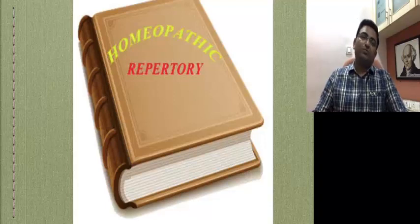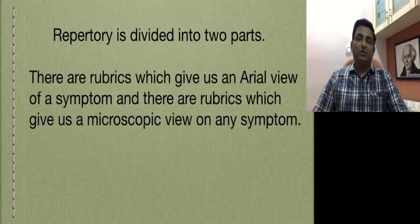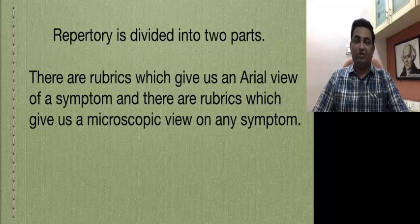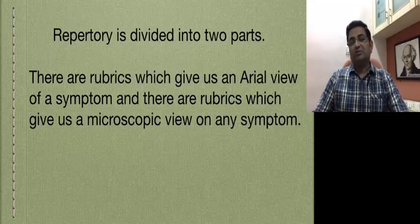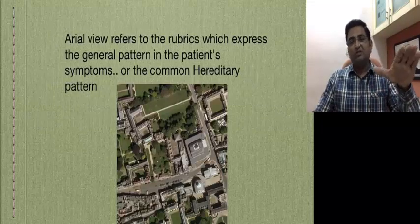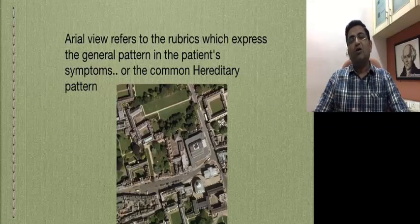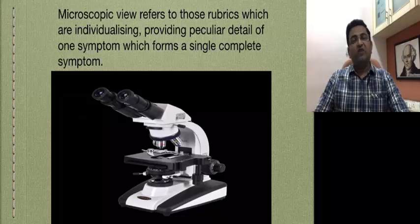From my practical perspective, I divided repertory into two parts. There are rubrics which give us an aerial view of a symptom, and there are rubrics which give us a microscopic view of any symptom. Aerial view means these are the rubrics which express the general pattern in the patient's symptoms or the common hereditary pattern. And microscopic view refers to those rubrics which are individualizing, providing peculiar detail of one symptom which forms a single complete symptom — what we can call with QRS.